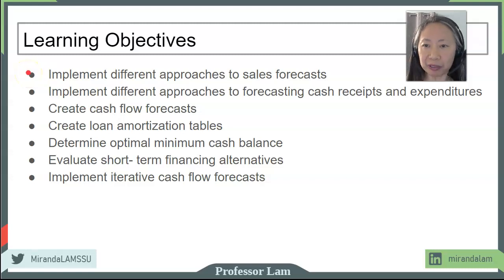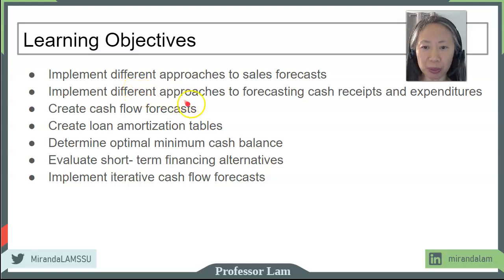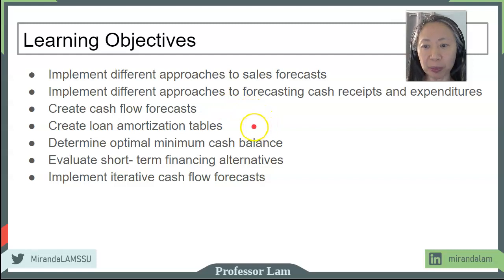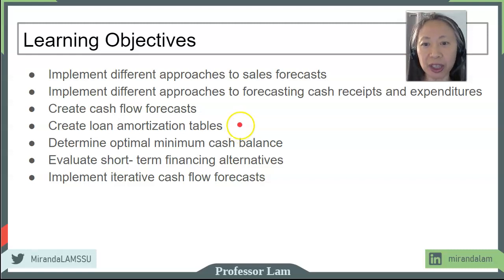Here are the main topics that we will cover in this class. We're going to discuss different ways to implement sales forecasts — most importantly drawing from the sales forecast. We're going to develop forecasting about cash receipts and expenditures, which will lead us to more detailed cash flow forecasts. We'll also touch back on amortization from time value of money and see how that ties into cash flow forecasting. And then we will evaluate different financing alternatives.